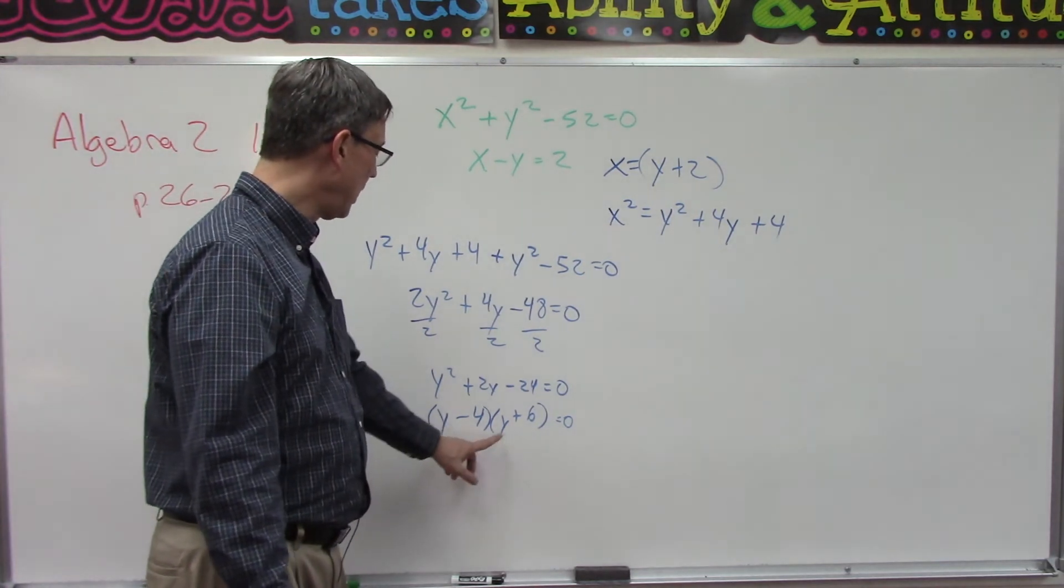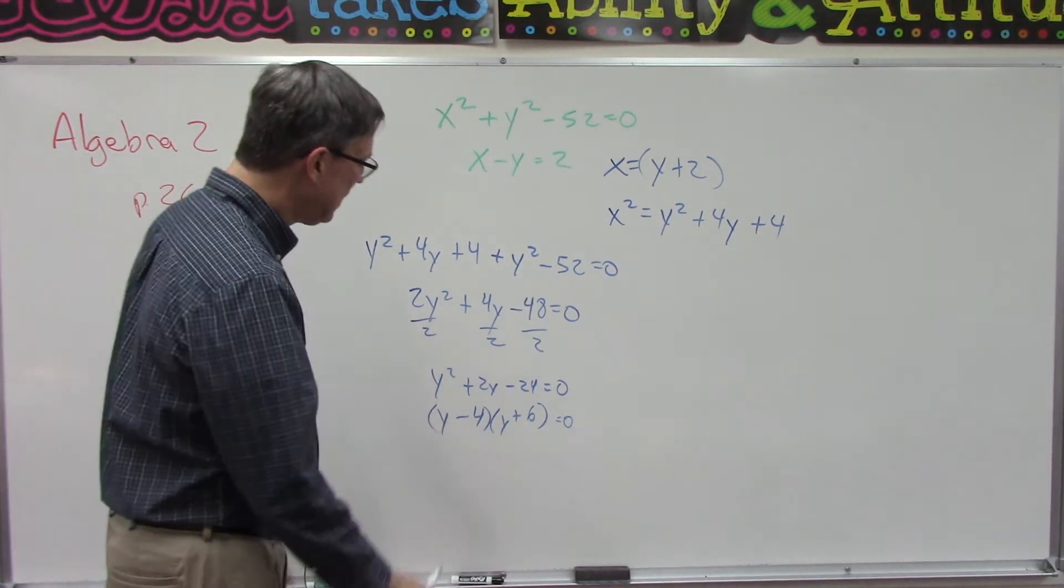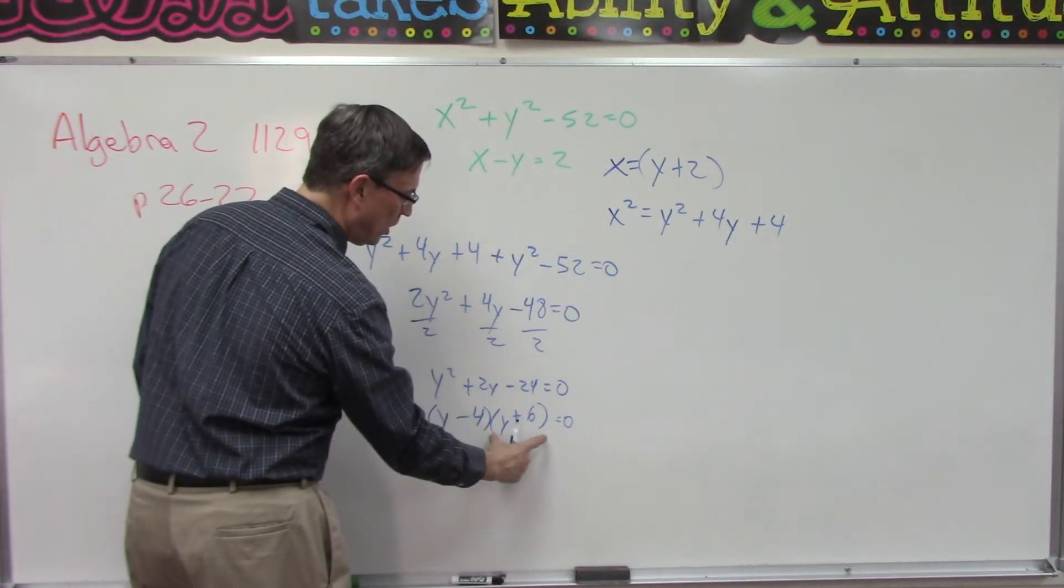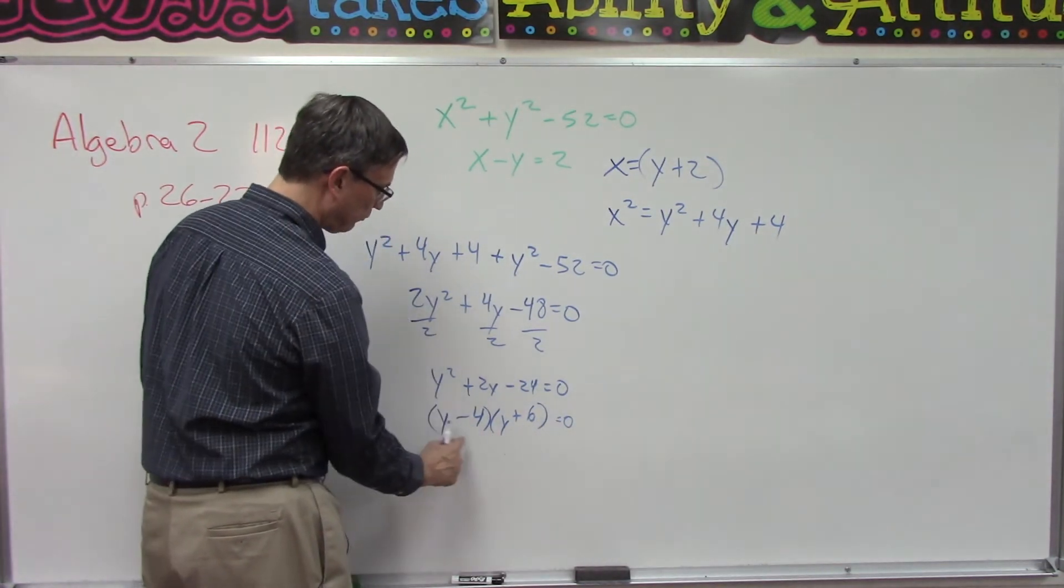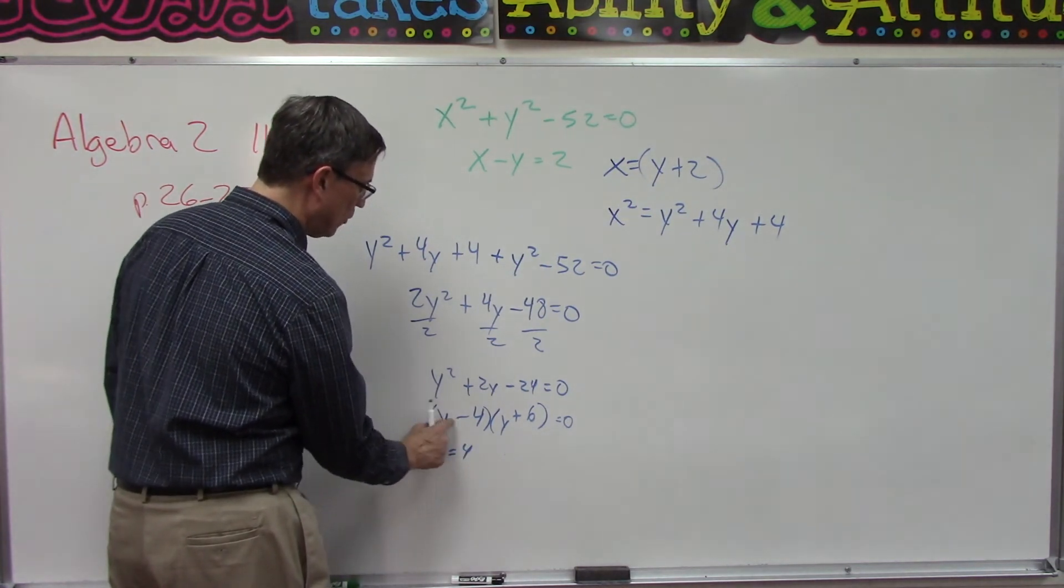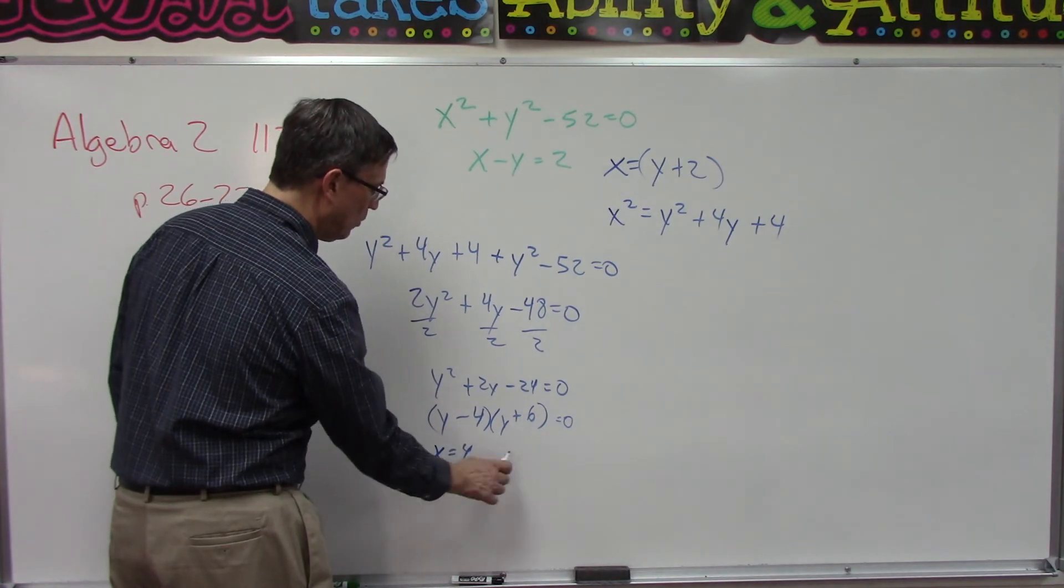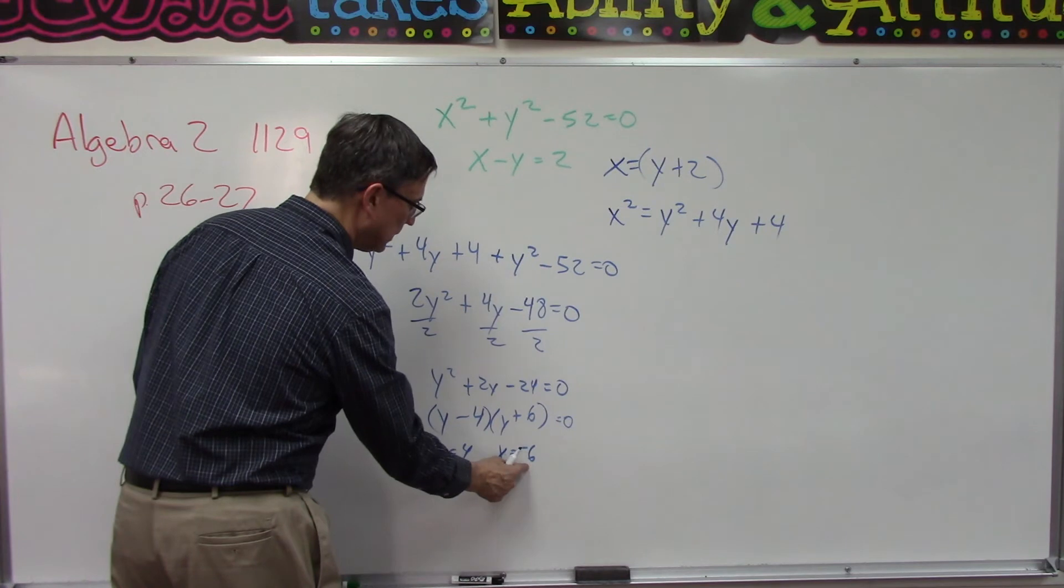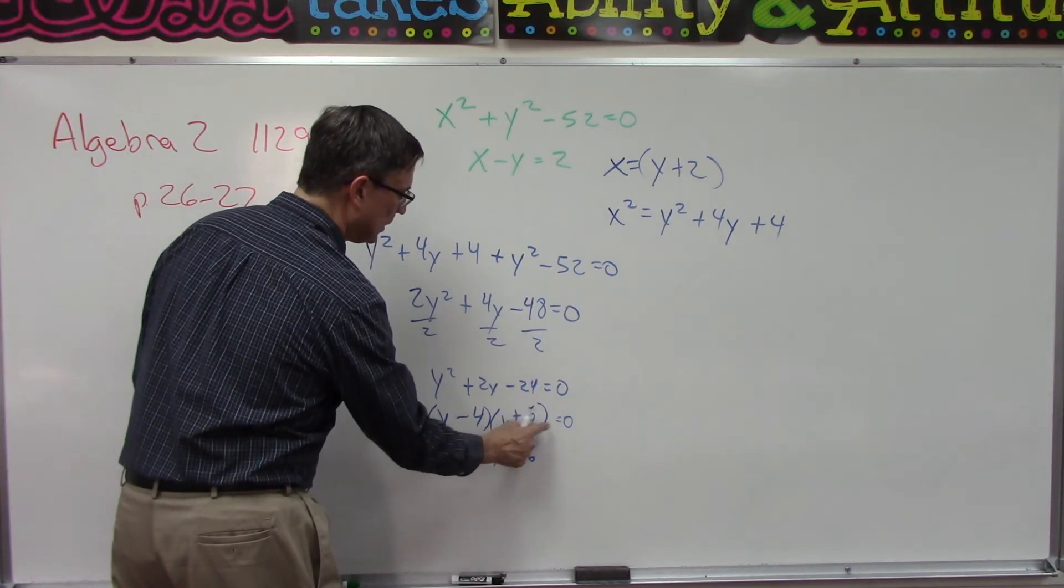So if y minus... either this quantity has to equal zero for this answer to equal zero, or this has to equal zero. Which means that over here y would have to be four, because four minus four is zero. Or here we could say y is negative six, because negative six plus six would equal zero.